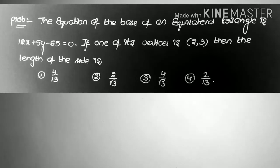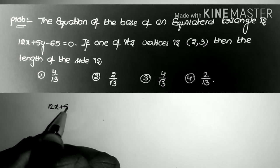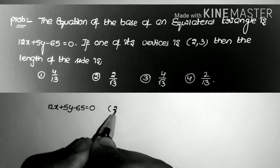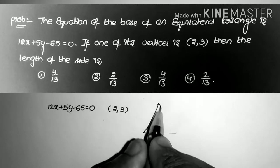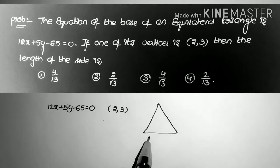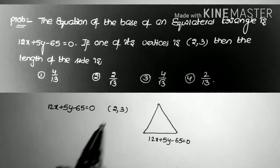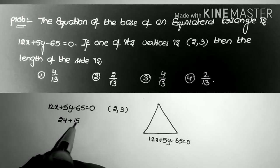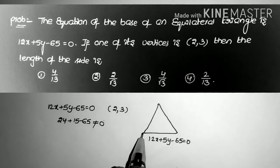The equation of the base of an equilateral triangle is 12x + 5y - 65 = 0. Given that one of its vertices is (2,3). Replacing that vertex in the equation gives 24 + 15 - 65, which is not equal to 0, so this point is not on the line.